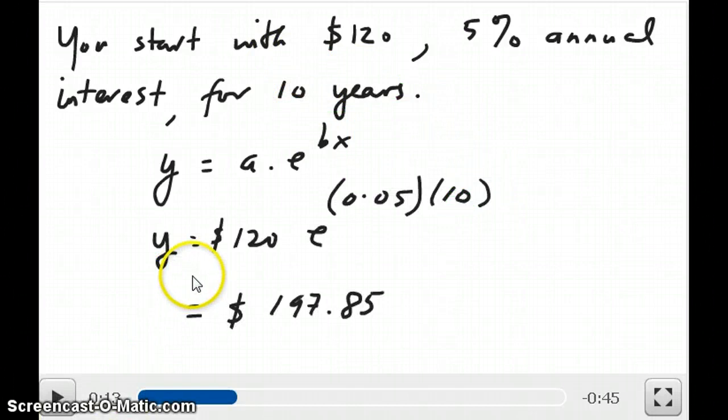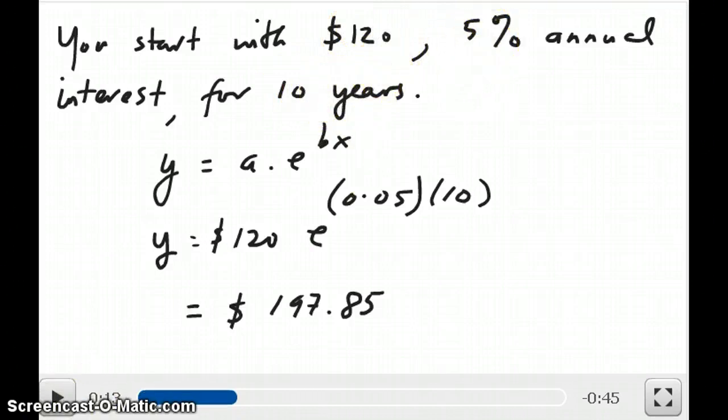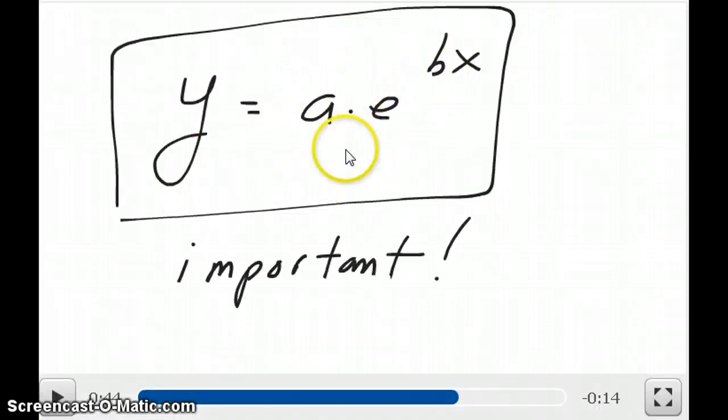If you plug in all of those numbers, you should get $197.85 as the final balance of your savings account if you were to put $120 at the beginning and leave it in there for 10 years with a 5% annual interest rate. You want to keep this exponential function form in mind, y equals a times e to the power of bx, because you'll see it a few times in Chem 12 when we discuss different topics. This is very important.